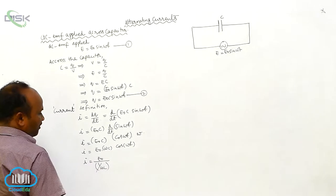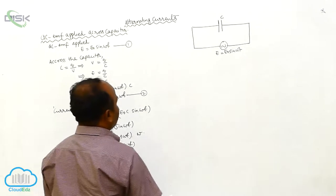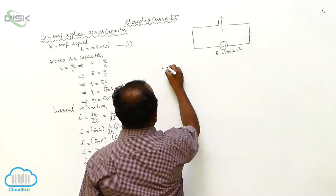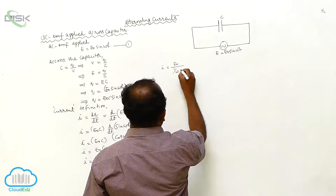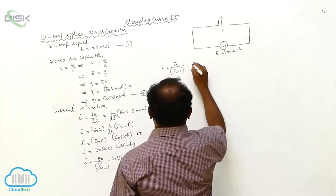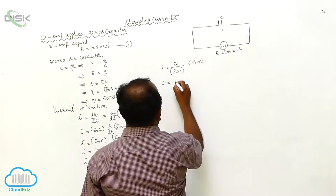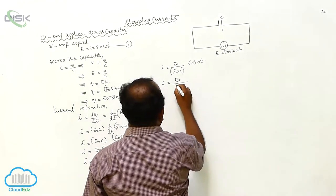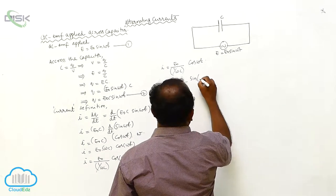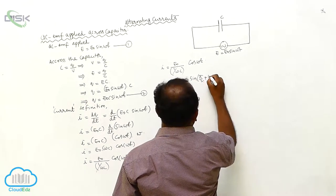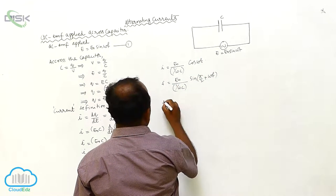This may be rearranged as i = (E₀ / (1/ωC)) cos(ωt). Now, cos(ωt) = sin(90° + ωt), so this expression can be rewritten using that trigonometric identity.